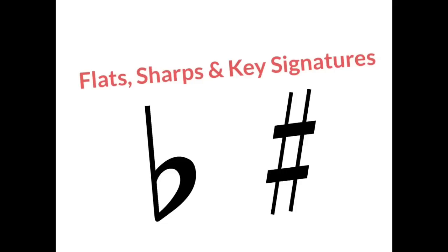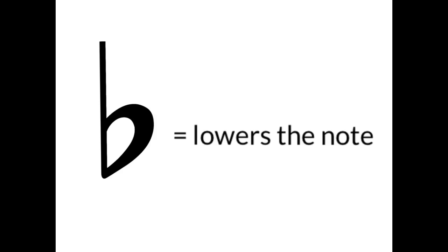Today we're going to be talking about flats, sharps, and key signatures. The first musical symbol we're going to talk about is called a flat. A flat lowers the note by one half step.